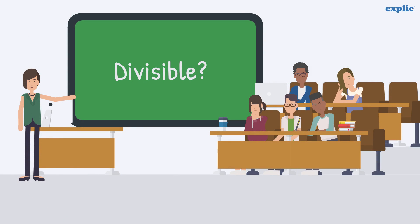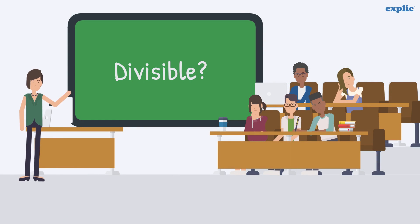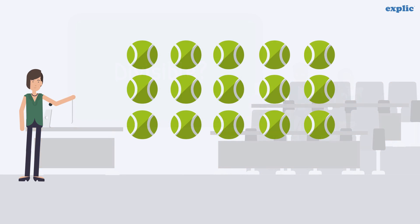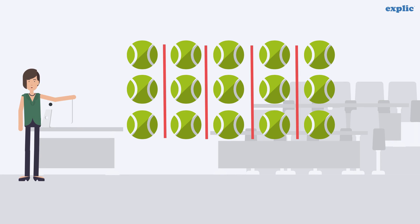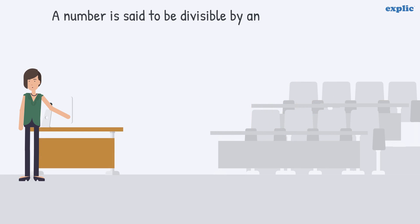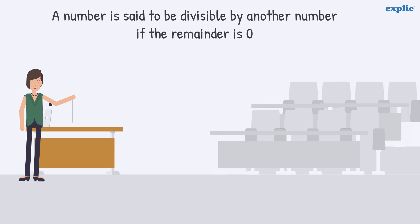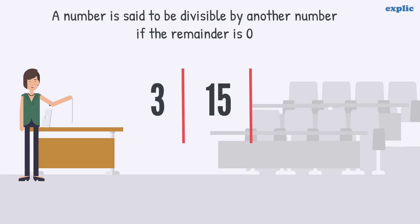Let's understand what divisible means. 15 is divisible by 3 and 5 because we can divide it into 3 or 5 equal parts. In other words, a number is said to be divisible by another number if the remainder is 0.